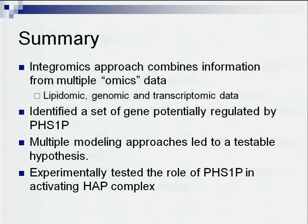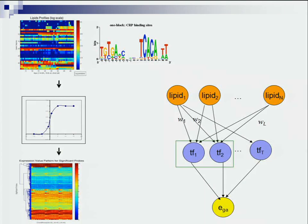To summarize, we have integrated multiple data domains using simple statistical models. We begin to identify sets of genes potentially regulated by sphingosine-1-phosphate, generate hypotheses about transcription factors potentially involved, and then model the information flow from the stress to lipid change, transcription factor activation, and gene expression. This is ongoing work. We used gene expression data and genomic data for the activation states, and then modeled the relationship in a unified framework.